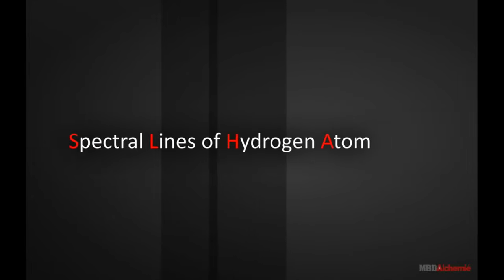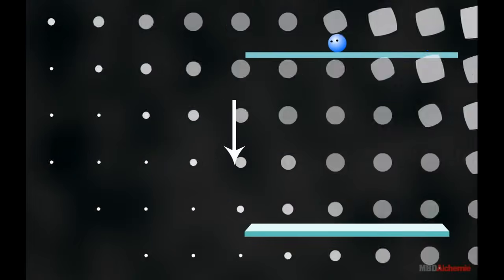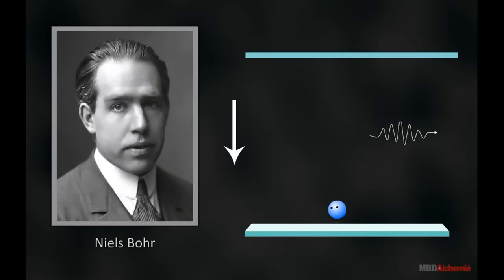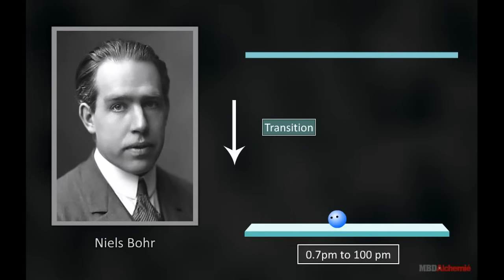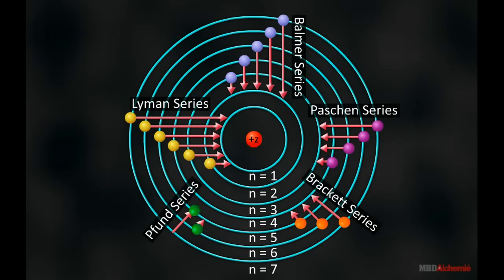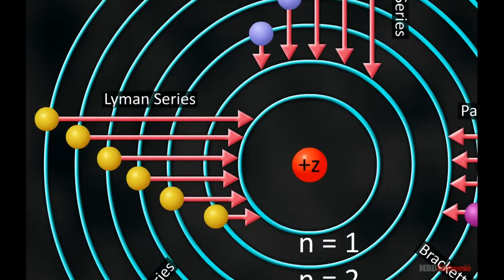Spectral Lines of Hydrogen Atom. According to Bohr's third postulate, when an atom makes a transition from a higher energy state to a lower energy state, energy is radiated in the form of a photon having a certain frequency. The spectral lines arising from the transition of electrons from higher energy states to a definite energy state form a spectral series. The various spectral series of hydrogen atom can be represented with the help of an orbital diagram, as shown in the animation.